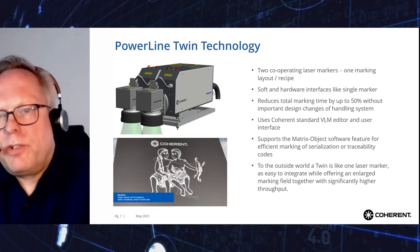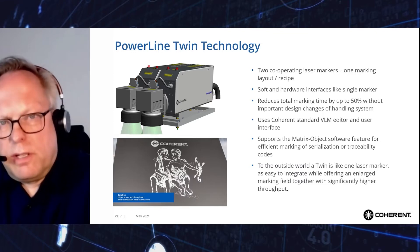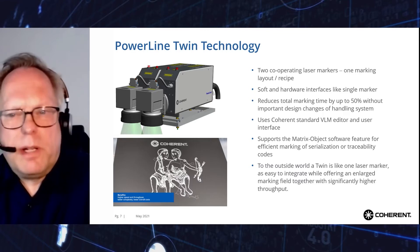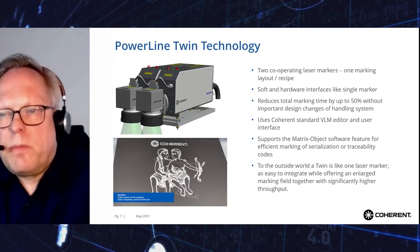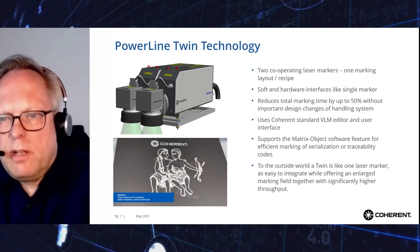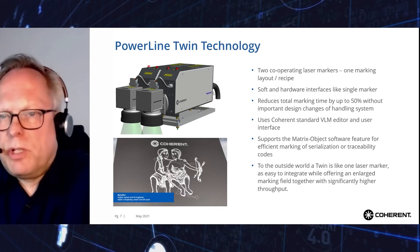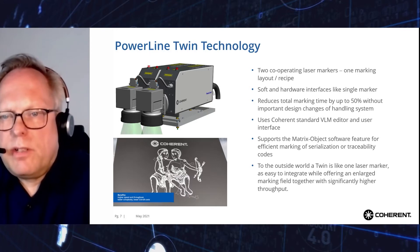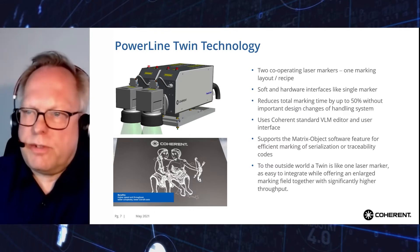A special feature of a TWIN is its simple hardened software interfaces that are equivalent to those of single laser markers. Like in multiple-step marking, a TWIN operates with just one marking layout. If serialization of components is required, users can take advantage of the VLM matrix object feature. From a hardware and software point of view, TWINs are as easy to integrate as single laser markers.